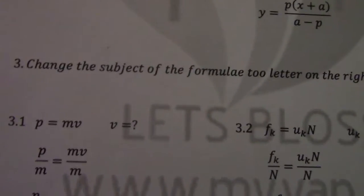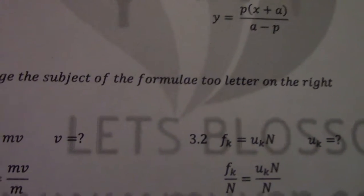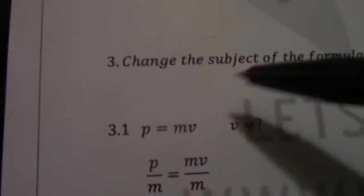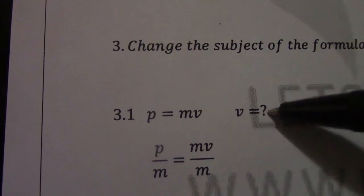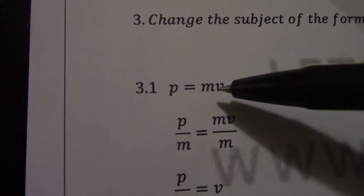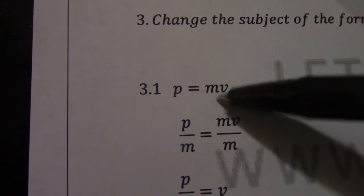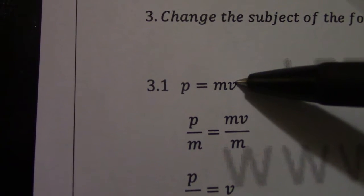3. We can also test you and say change the subject of formula in this case to the letter on the right. So you see on the right here I have a letter I want v equal to. So that means I have to use v and make it the subject of formula. So 3.1, physics equation, momentum equals mass times velocity, or p equals m times v.